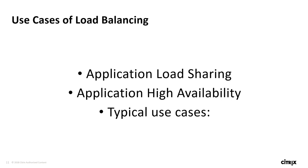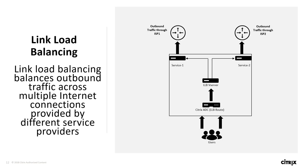Database-specific load balancing is also available. For example, link load balancing balances outbound traffic across multiple internet connections provided by different service providers. Unlike layer 7 load balancing, link load balancing is a service representing a router or next hop. Methods applied to link load balancing are round robin, destination IP hash, least bandwidth, and least packets. Ping is the default monitor but configuring a transparent monitor is recommended. Monitoring is critical for link load balancing functionality and reliability.